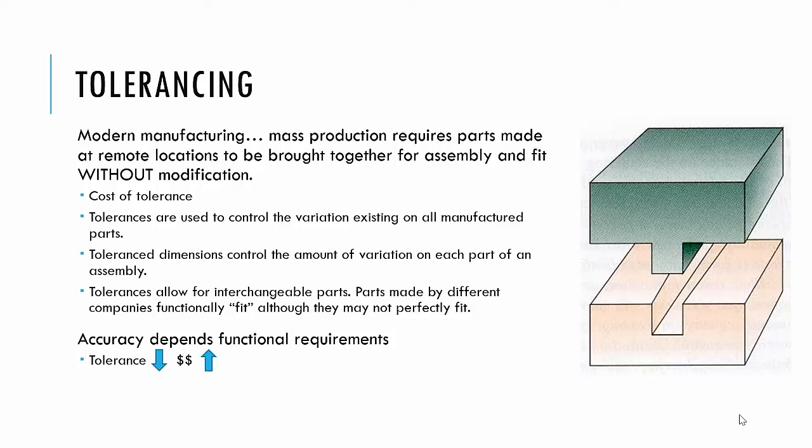Remember, there are some reference dimensions that you would neither manufacture nor inspect for. Tolerance dimensions control the amount of variation each part of an assembly can have. And tolerances give us truly interchangeable parts. They can be made by different companies, in different locations, by different people. But they fit functionally, even though they may not fit perfectly.